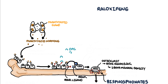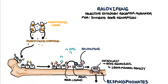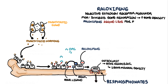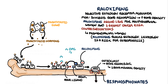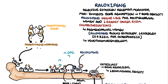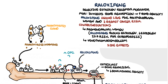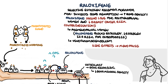Raloxifene is a selective estrogen receptor modulator, a SERM. It inhibits bone resorption and reduces the risk of vertebral fractures as well as increases bone density. It's quite common in post-menopausal women with osteoporosis, as it also reduces the risk of breast cancer. It is contraindicated in pre-menopausal women, as it would block estrogen action on bone and actually cause a decrease in bone density, increasing the risk of osteoporosis. Another contraindication is venous thromboembolism, because the side effects of raloxifene include menopausal symptoms, hot flushes, leg cramps, peripheral edema, and an increase in thromboembolic events.